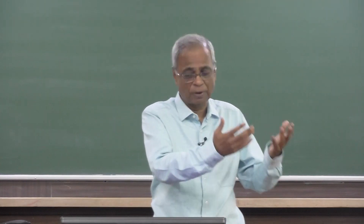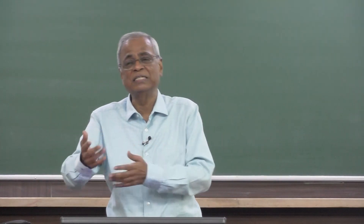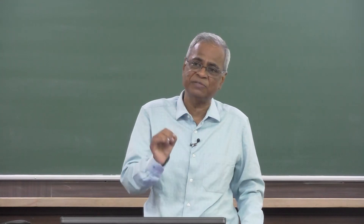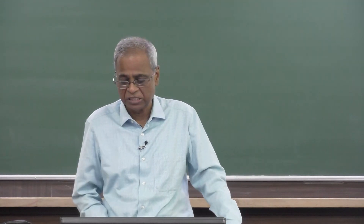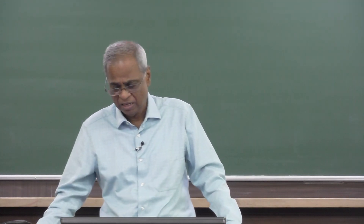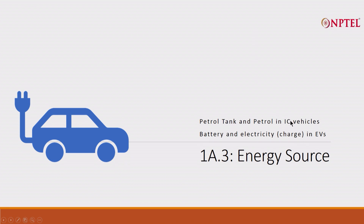For petrol or internal combustion engine — called ICE vehicle — there is a petrol tank. For electric vehicles, battery and electricity are the energy source. The battery is charged with electricity. So let us talk about the difference between these two sources.